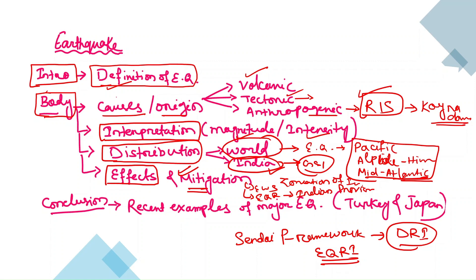Finally, conclude your notes. The question asked for recent examples, so in your conclusion give recent examples such as the Turkey and Japan earthquakes — mention that these are major earthquakes that happened in the recent past, the kind of damage they caused, and the actions taken to mitigate their effects. This is how you maintain the intro-body-conclusion structure while holistically covering the topic from every angle, adding dynamic elements like the Sendai Framework that make your answer relevant, specific, and concise — and very easy to revise at the final stage.